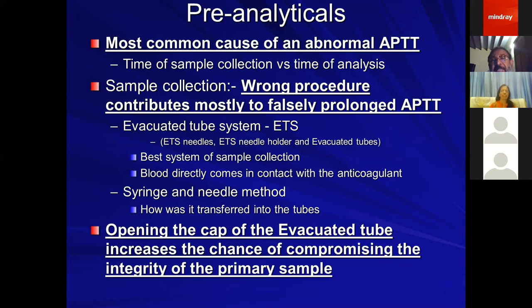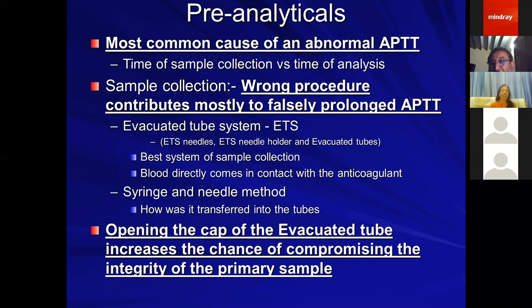Most hospitals in India now collect samples using an evacuated tube system, where the sample comes directly in contact with the anticoagulant as soon as it leaves the vein. Many people still use syringe and needle, and then open the caps of evacuated tubes to transfer blood — converting the evacuated tube system into a normal tube, because the vacuum is lost. Opening the cap of an evacuated tube increases the chance of compromising the integrity of the primary sample. Never open the cap if you are using an evacuated tube system.